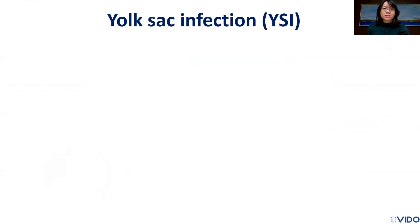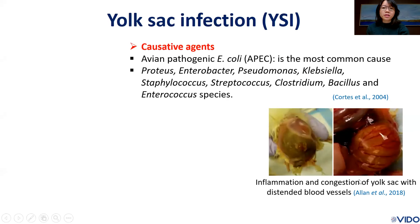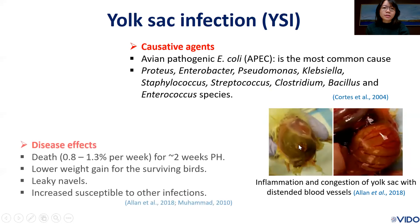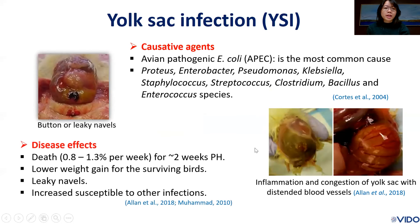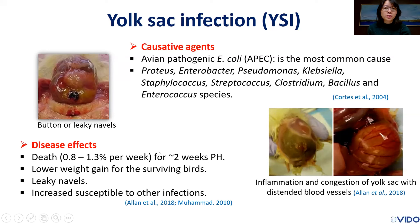Yolk sac infection is the inflammation and congestion of yolk sacs, as shown in this figure, and is caused by avian pathogenic E. coli. This disease can cause up to 1.3% mortality per week during the first two weeks. Surviving birds after infection with a leaky navel may have lower weight gain as well as increased susceptibility to other infections.